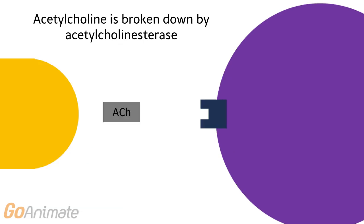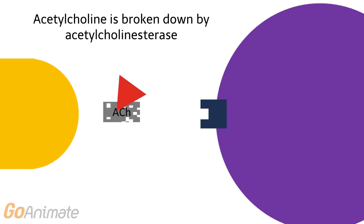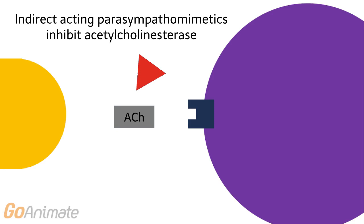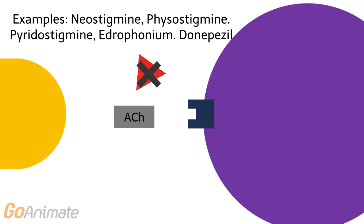Remember that acetylcholine is broken down by acetylcholinesterase. Indirect-acting parasympathomimetics inhibit acetylcholinesterase. Examples of these drugs include neostigmine, physostigmine, pyridostigmine, edrophonium, and donepezil.